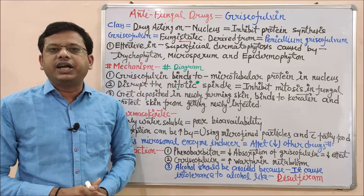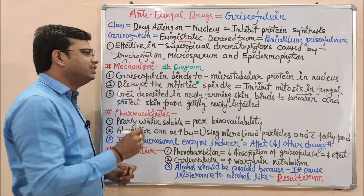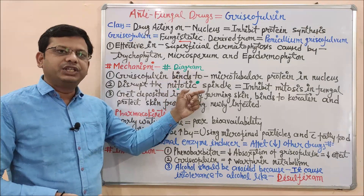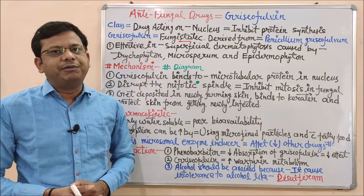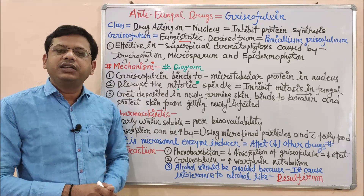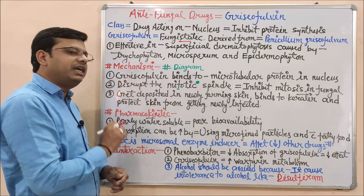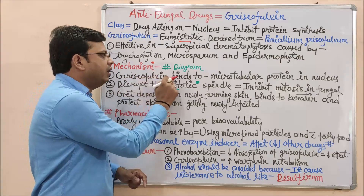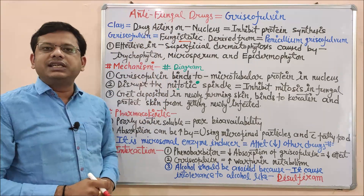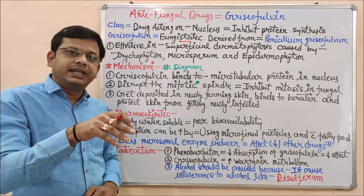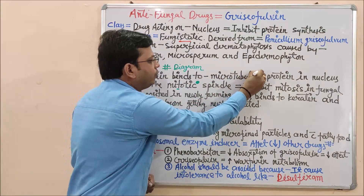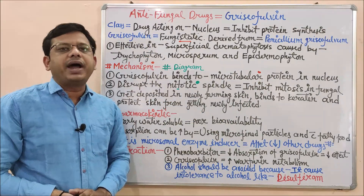This indication tells us where we can use it. Now we have the most important point: mechanism of action. We have two ways — I will include a diagram for this point, and then I will give a live demo on how it affects fungal cell growth and controls it in a static manner. First, the sequence in the action mechanism: Griseofulvin binds to microtubular protein in the nucleus. This microtubular protein is important for division of the fungal cell — we can inhibit it at this site.